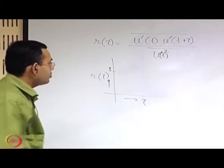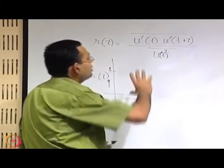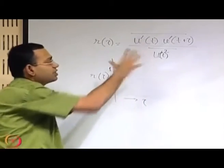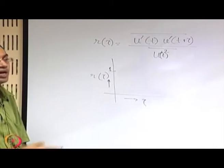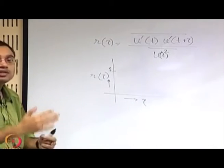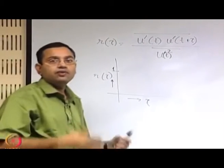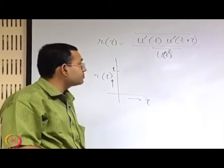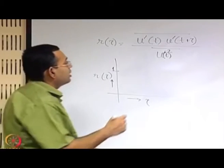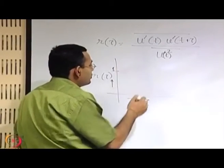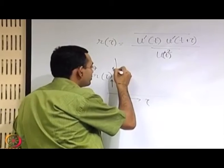As we increase tau, we are having the correlations of the same random variable at two different instances of time which are differing from one another, and in that way the correlation coefficient will tend to get reduced.